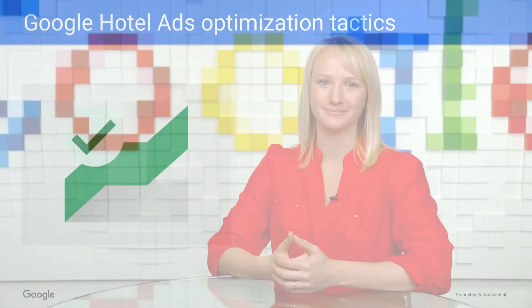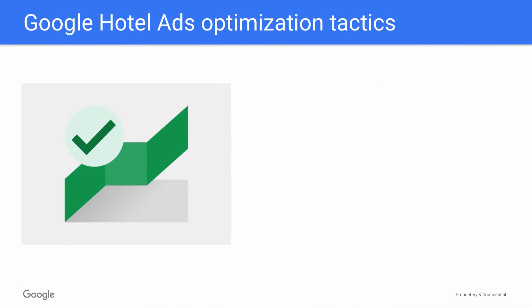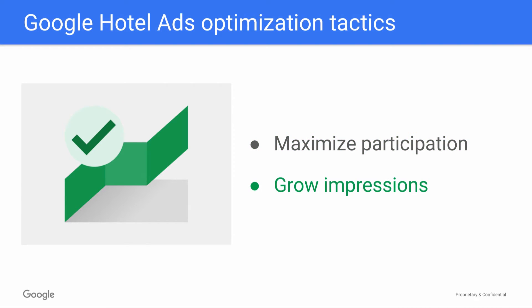To get us started talking about optimization of Google Hotel Ads, let's walk through the key metrics you'll look at when thinking about how to improve your performance. Generally speaking, you have two main goals when optimizing Google Hotel Ads: maximizing participation, which essentially means increasing how often your hotel ads are eligible to show, and growing your impression share, or actually capturing more of those eligible impressions.